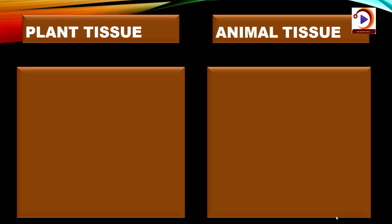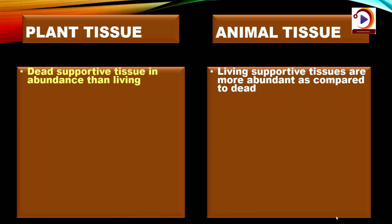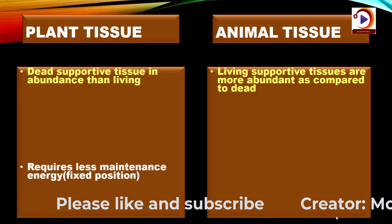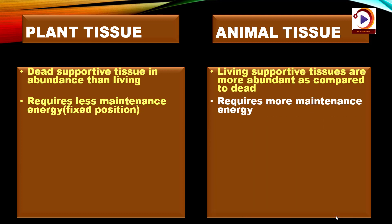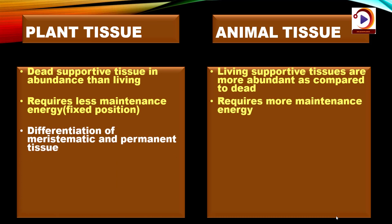There are certain differences between plant and animal tissue. Most of the plant tissues are dead and supportive in function, because of the lesser energy requirement by plants due to their fixed position. While most of the animal tissues are living, as they have to perform different tasks like moving around in search of food, mates and shelter. Another important difference is in the pattern of growth — plant growth is limited to certain regions whereas growth in animals is uniform.